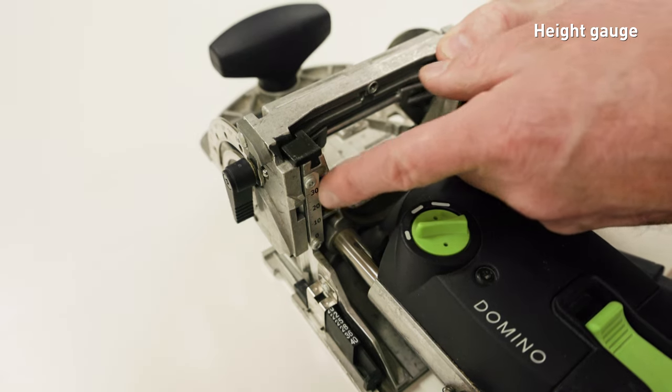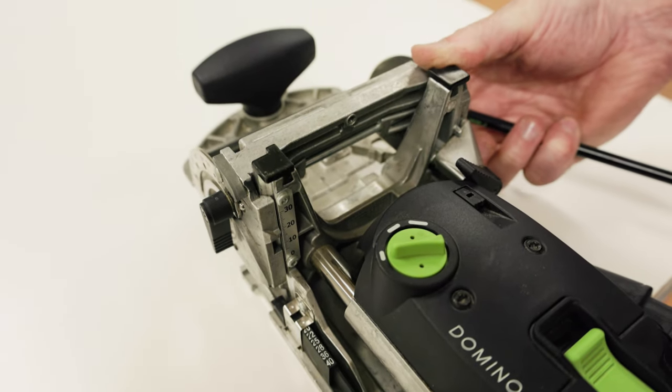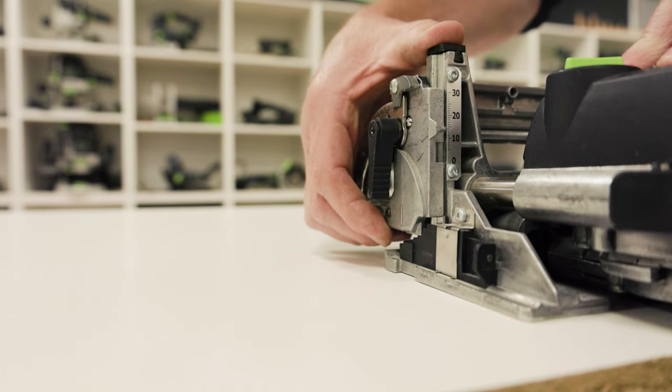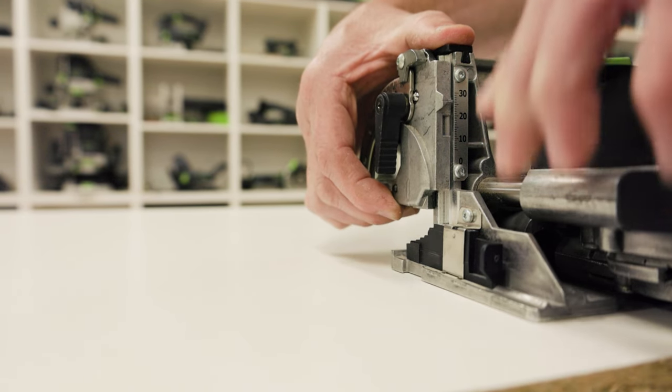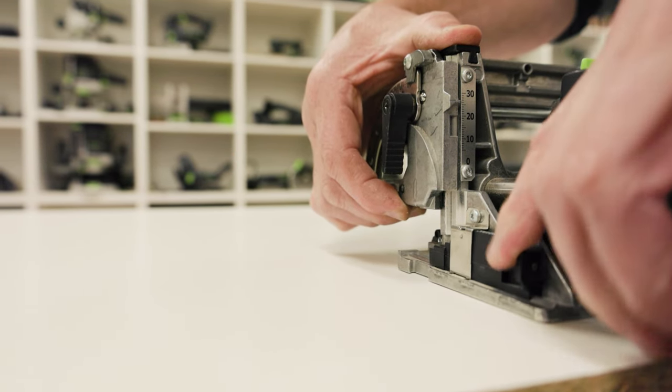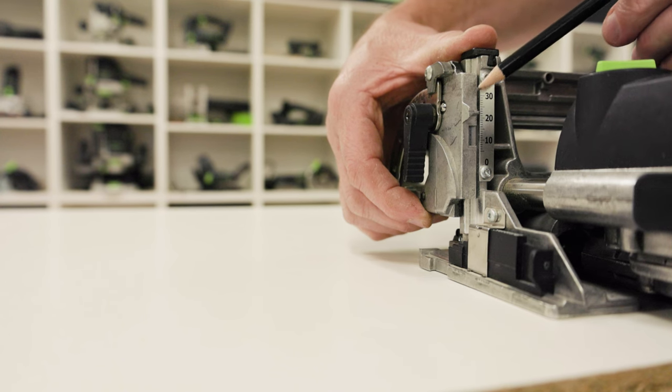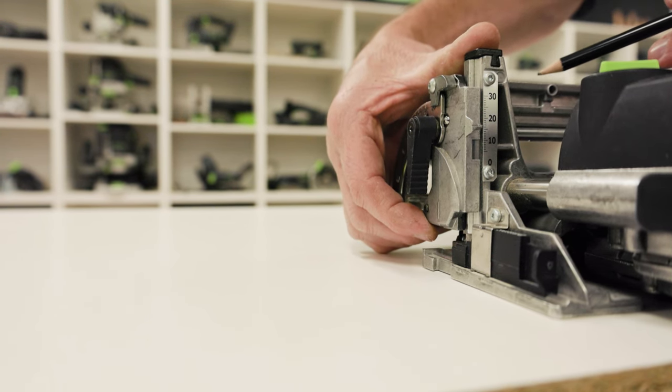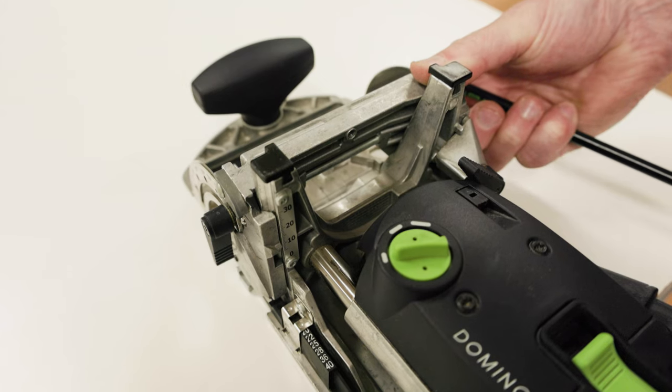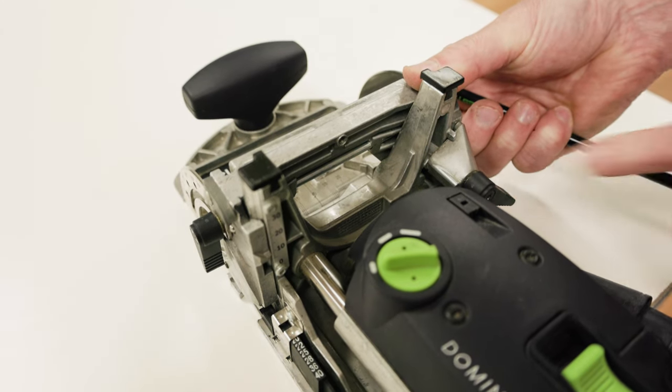When using the height gauge, the measurements represent the centre of cutter. To use the height gauge, make sure the board thickness gauge is retracted out of the way. Raise or lower the fence until the pointer indicator is set to the desired height measurement on the gauge. Then the locking lever can be tightened.